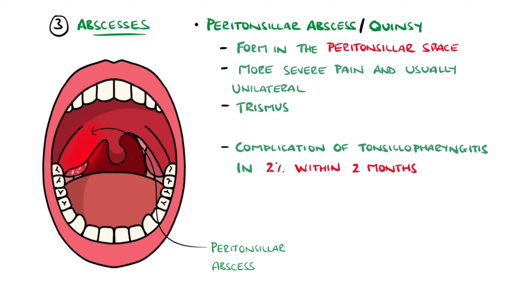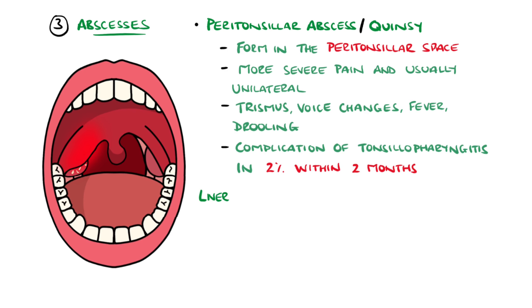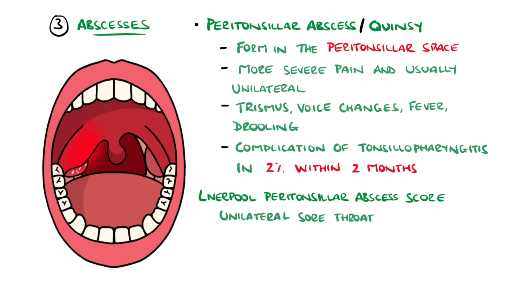Peritonsillar abscesses often present with trismus, voice changes, fever, and drooling, and on examination will show a bulge with deviation of the soft palate and often uvula. The Liverpool Peritonsillar Abscess Score gives an idea of the likelihood of a sore throat being a peritonsillar abscess.